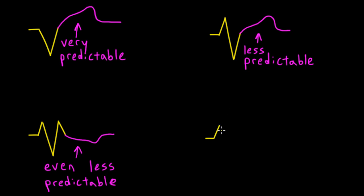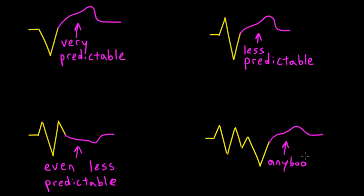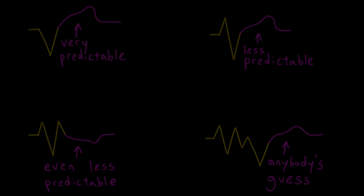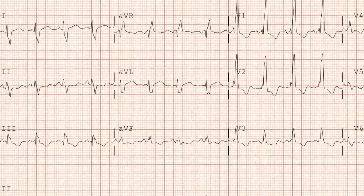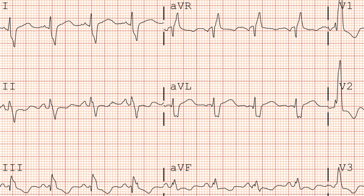Coming back to the last EKG we looked at, let's carefully look lead by lead and ask ourselves if these ST segment and T wave changes look expected or unexpected. Start with the limb leads — look carefully at the QRS complex in each lead and ask yourself if the ST segment and T wave changes that follow are typical of a secondary repolarization abnormality.